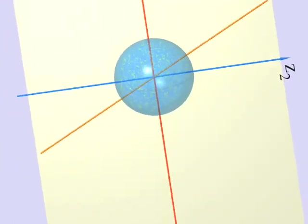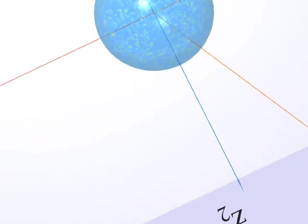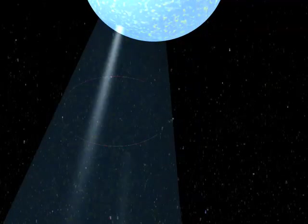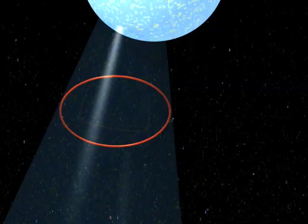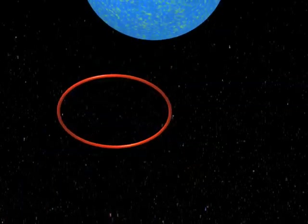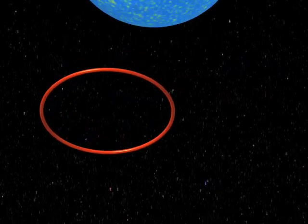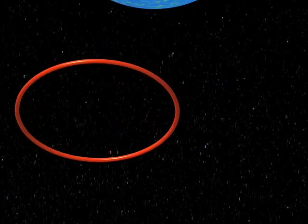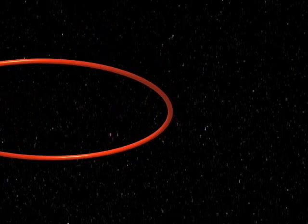We are going to look at all that using stereographic projection. Imagine that we project the three-sphere from the North Pole onto the tangent space at the South Pole, which is our three-dimensional space. Here is the projection of one of the circles which, as we have seen, is the intersection of one complex line and the three-sphere. But there are many such circles, one for each complex line going through the origin.